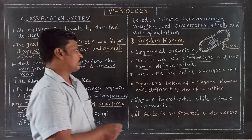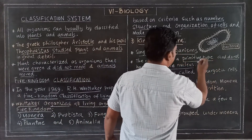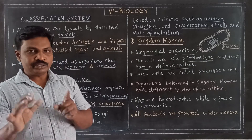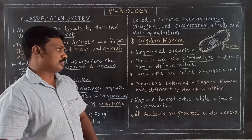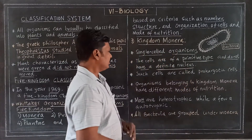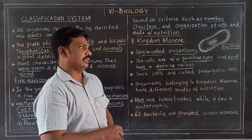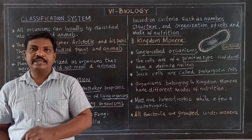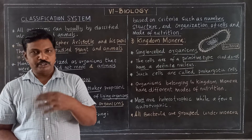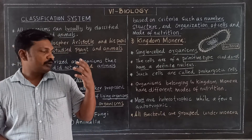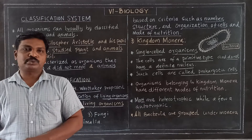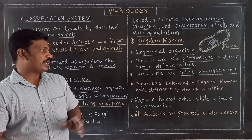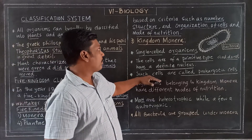The cells are primitive types and do not have a definite nucleus — the nucleus does not have a definite shape. These cells are called prokaryotic cells. Prokaryotic cells are primitive, found in the Monera kingdom.